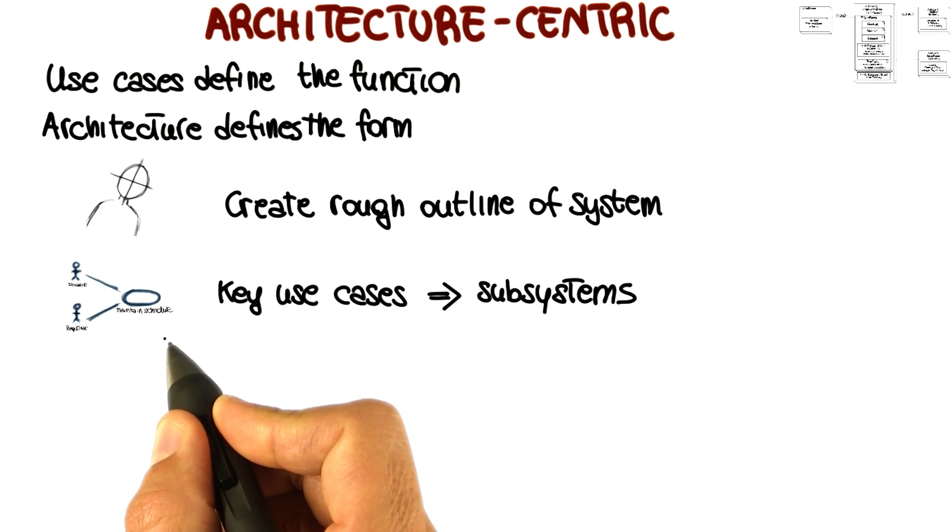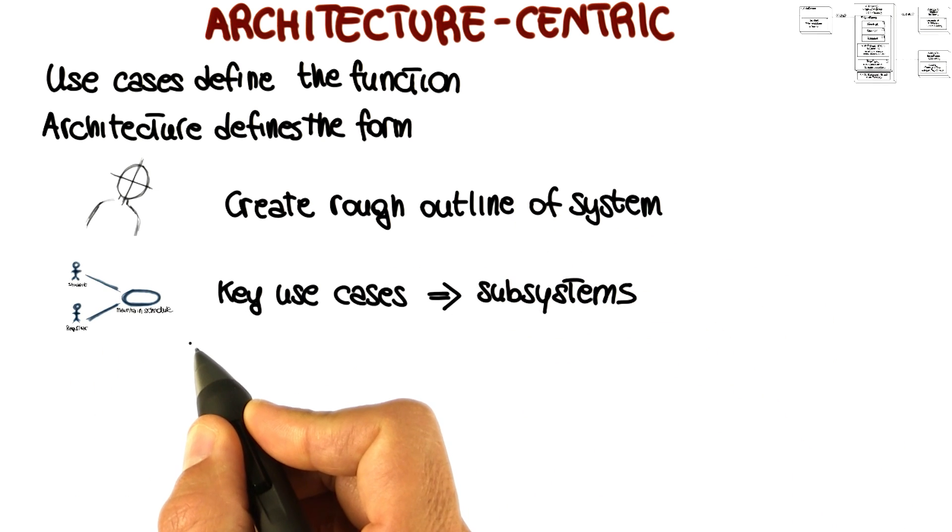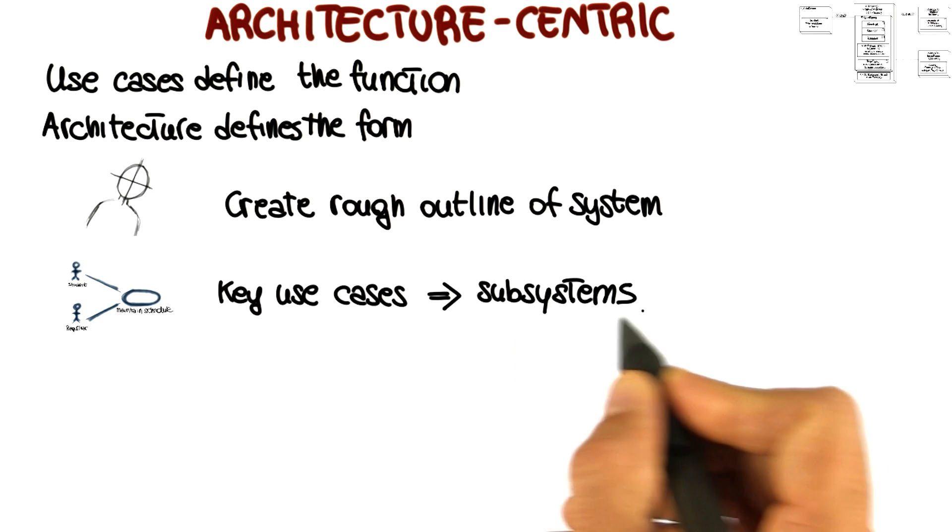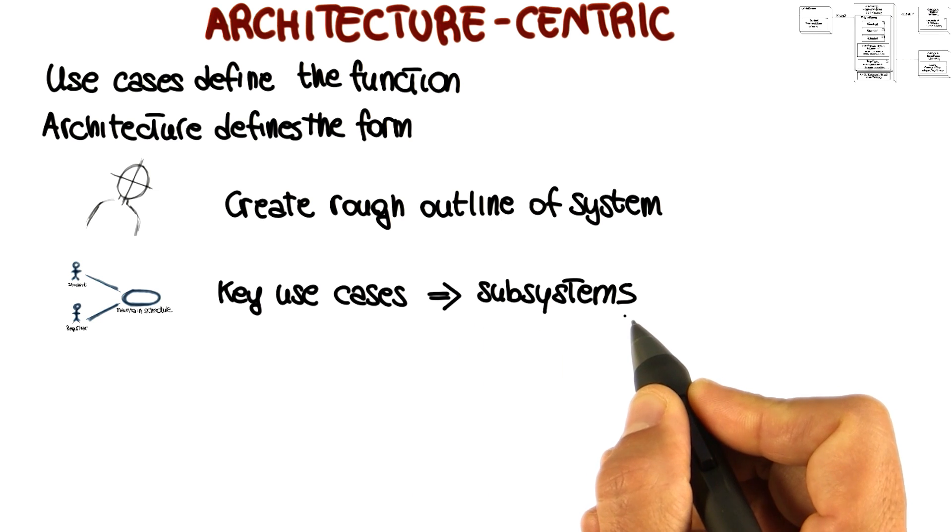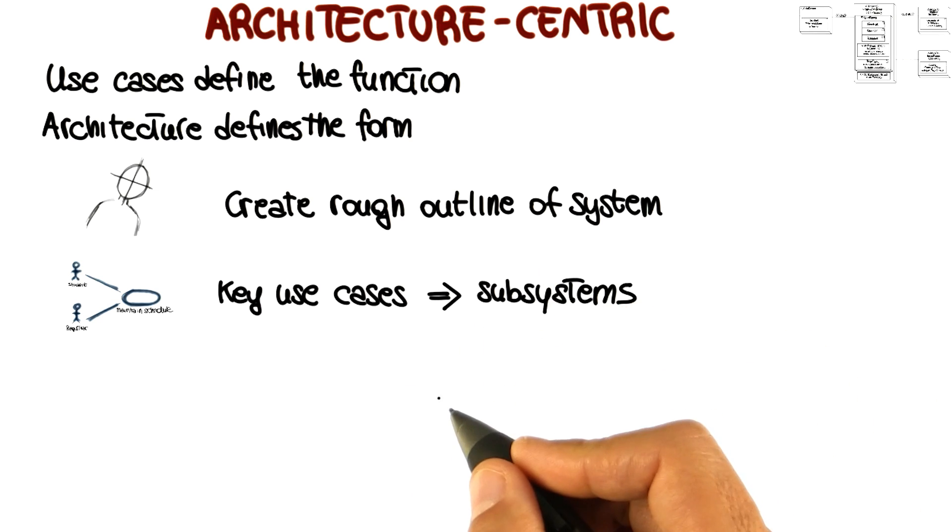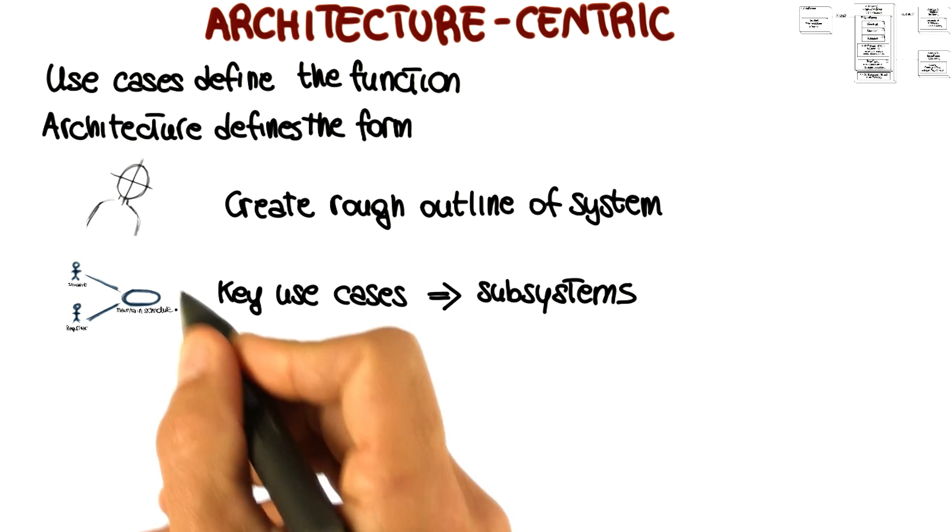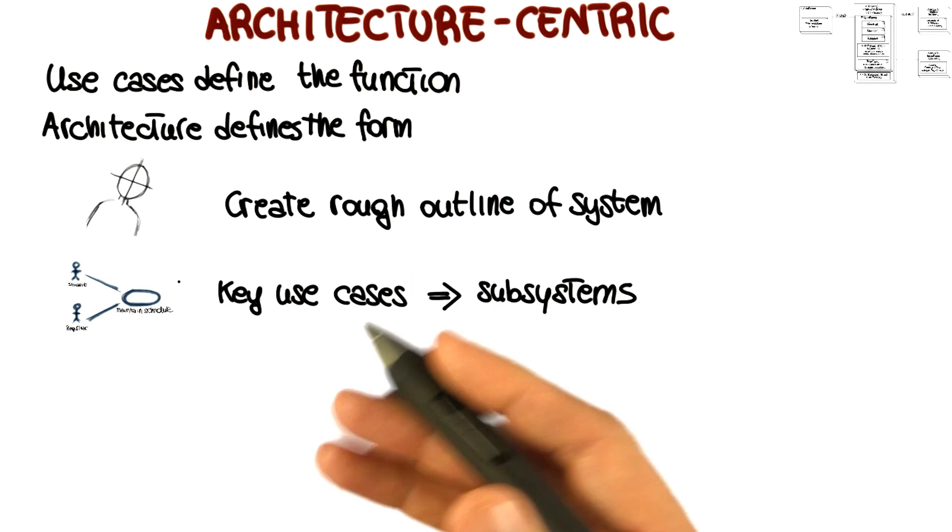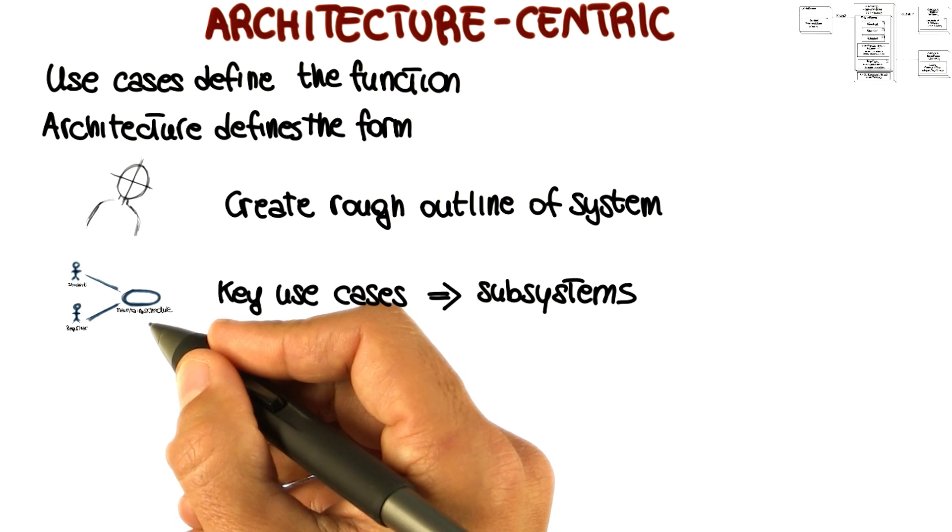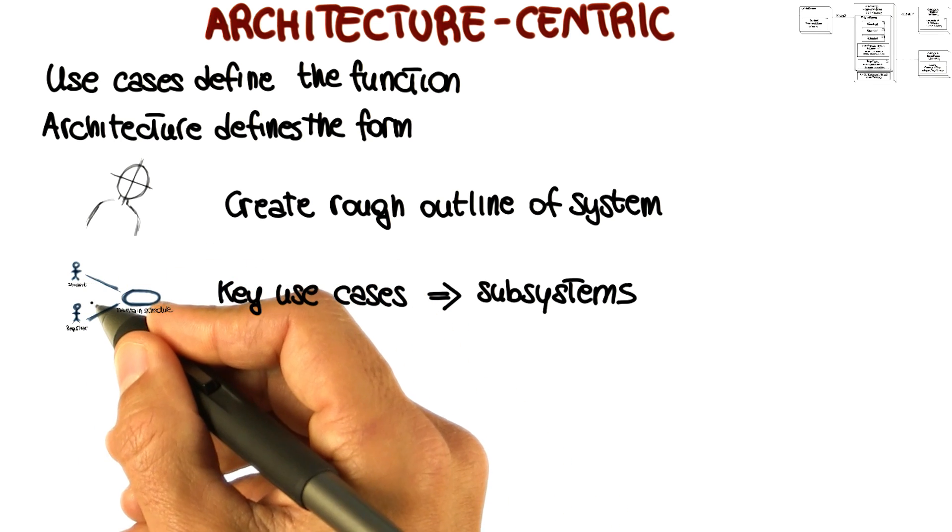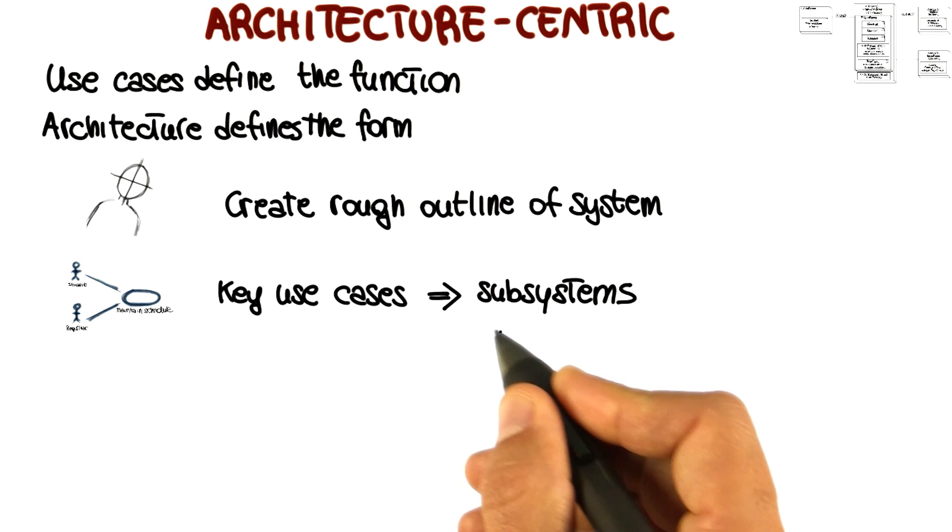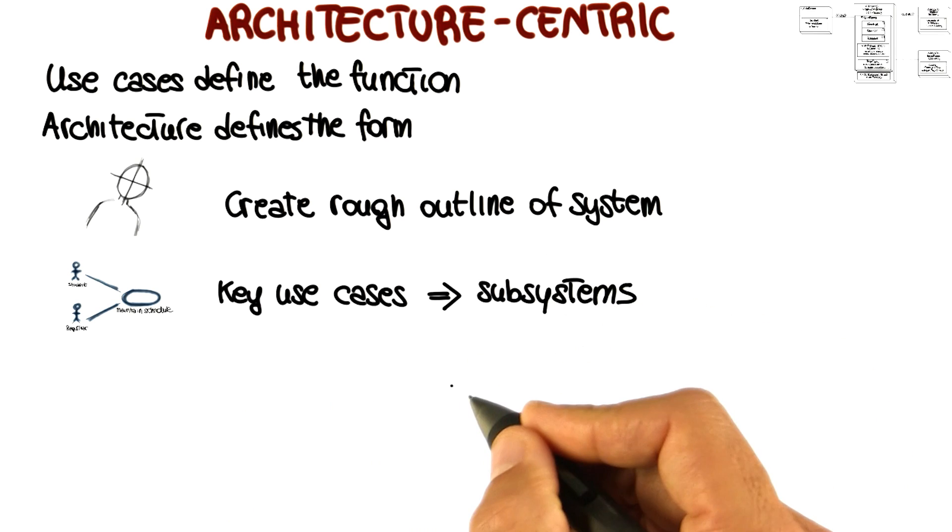We then use the key use cases in our use case diagram to define the main subsystems of my architecture. For example, in the case of a banking IT system, one of these subsystems might be the withdrawal system. So what will happen in that case is that we will have some use case that refers to the withdrawal activity, and by analyzing that use case, we realize that we need a subsystem that implements that piece of functionality.